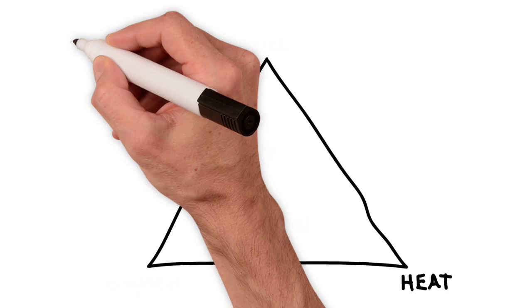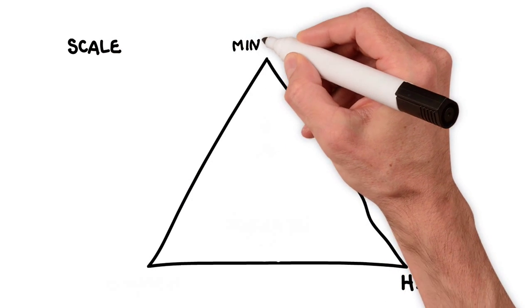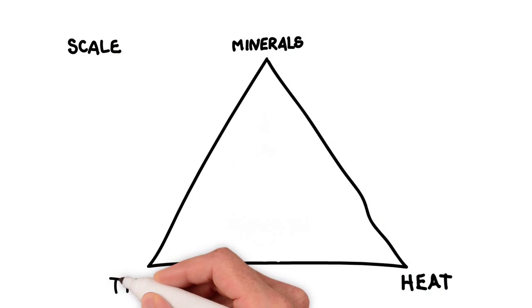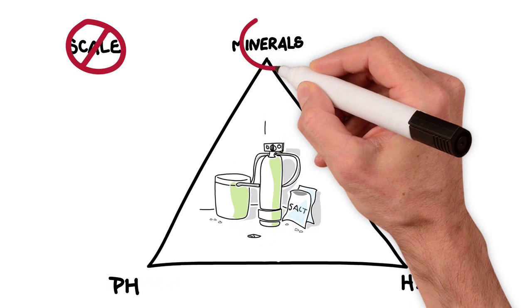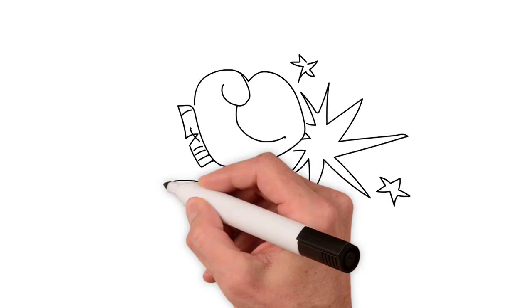Similarly, scale is created when minerals, heat, and the right pH level combine. Salt systems eliminate hard water buildup at the cost of removing valuable minerals from your water. On the other hand,